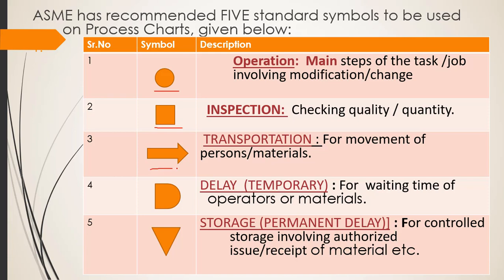We use an arrow for the transportation symbol. This symbol indicates the movement of a person, material, or equipment. Then we use the symbol D for delay. Delay is used to indicate waiting for any material or operation. If there is a certain waiting for a sequential operation, we use the delay symbol to indicate that waiting period.